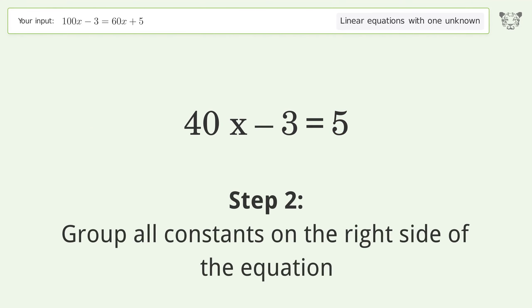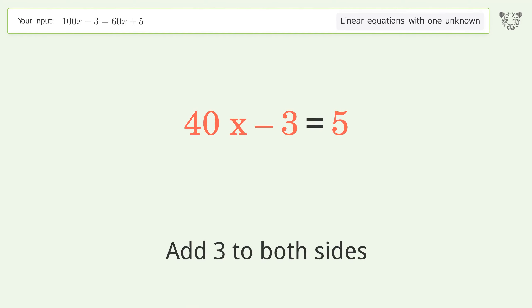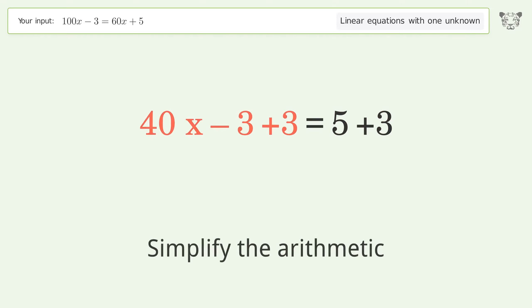Group all constants on the right side of the equation. Add 3 to both sides. Simplify the arithmetic.